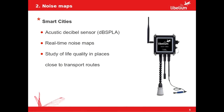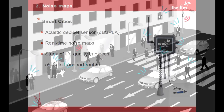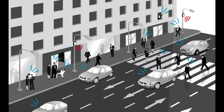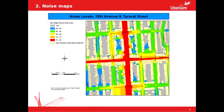Now we are going to see the second application about the noise maps. The smart cities line includes an acoustic decibel sensor that permits to know the noise in specific points. This will permit us to study the life quality in places close to transport routes. Similarly to the previous case, the deployment of these boxes with microphones will permit us to know the noisy points in the city. In this image you can see a noise map example, with different noise levels depending on the decibels measured in each street.